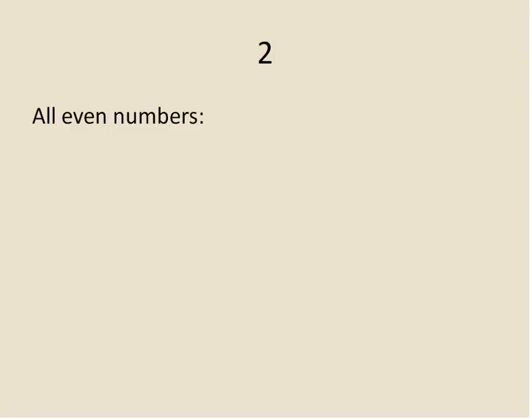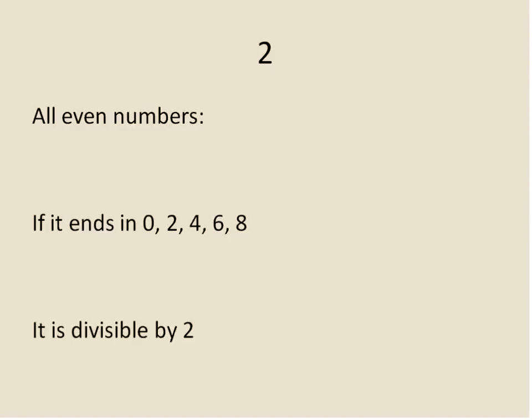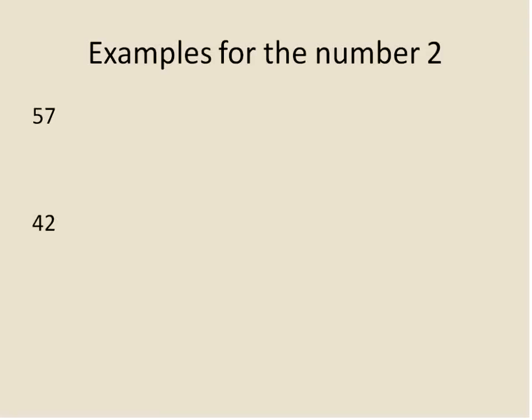Let's move on to something a little bit more complicated, and that's the number 2. All even numbers have a factor of 2. So if it ends in 0, 2, 4, 6, or 8, then 2 is a factor of it. Divisible by 2 is another way of saying that — the number would be divisible by 2, or 2 is a factor of that number.